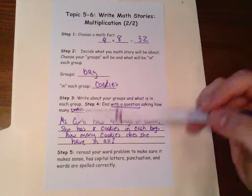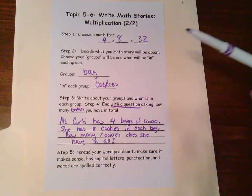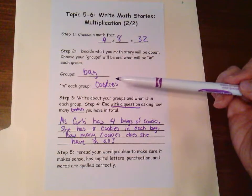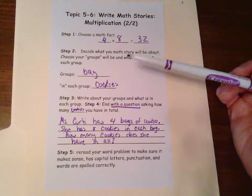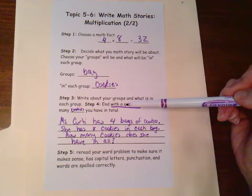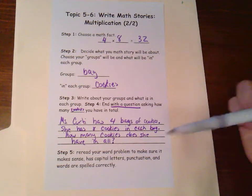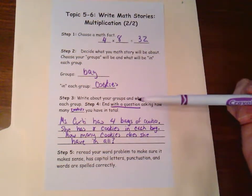Next, go ahead and write about what you have, how many bags you have, how many cookies you have, or whatever your groups are in each group might be. And then always end with a question asking how many do you have in total of whatever it is in each of your groups.